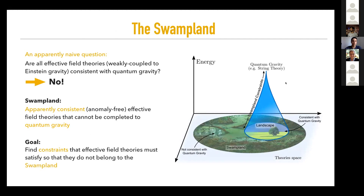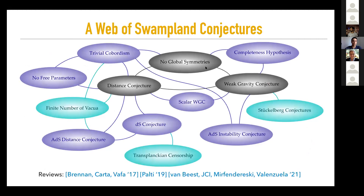We expect Swampland constraints to get more constraining when we go up in energy, maybe even finding a unique theory of quantum gravity, for example string theory. The progress in this program is a web of Swampland conjectures. The most important thing, at least to me, is that they are connected — they are not isolated conjectures, but actually forming a web. For reviews, please look at these references.